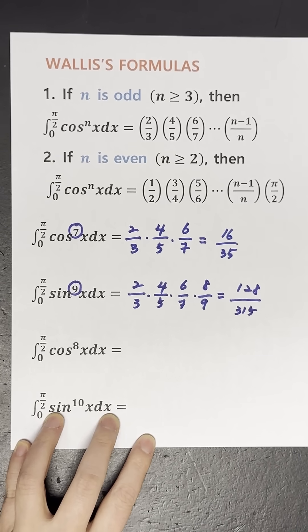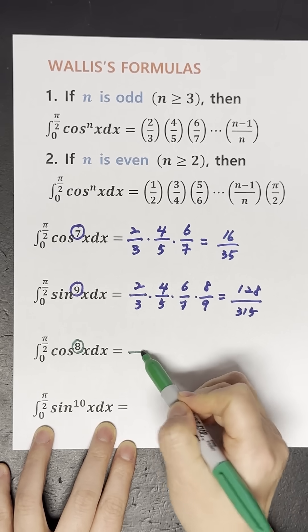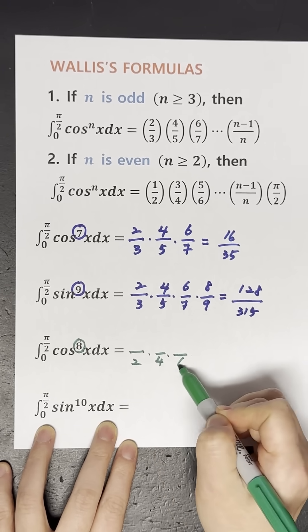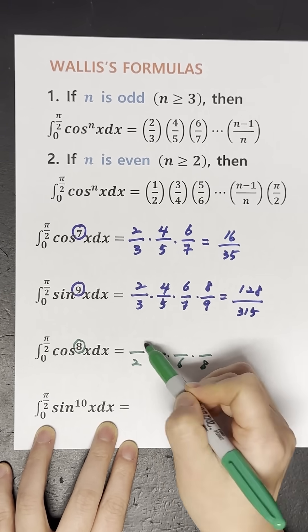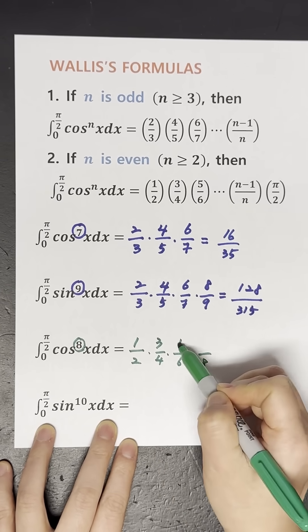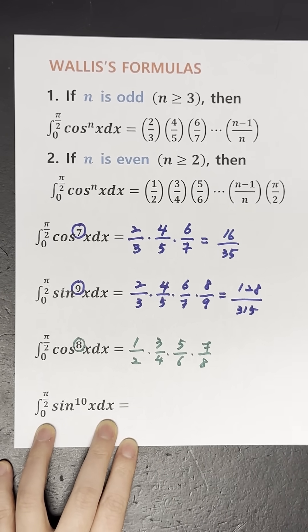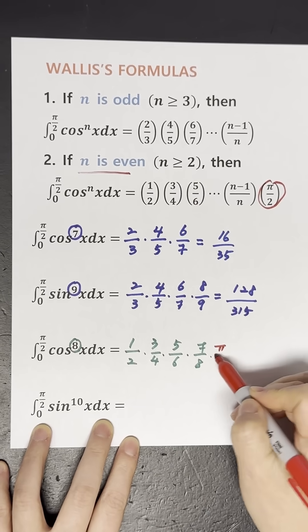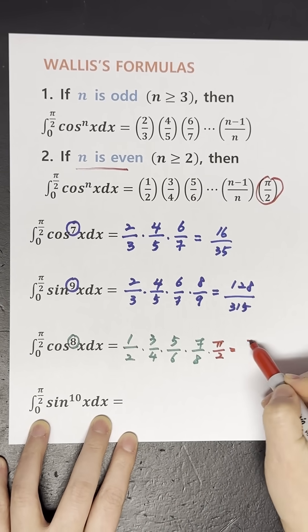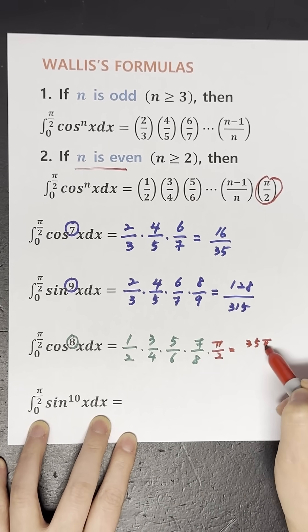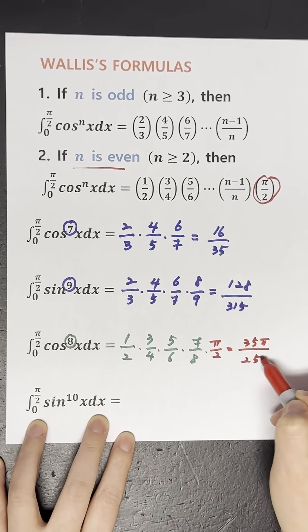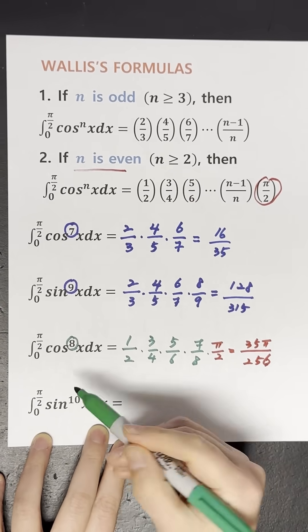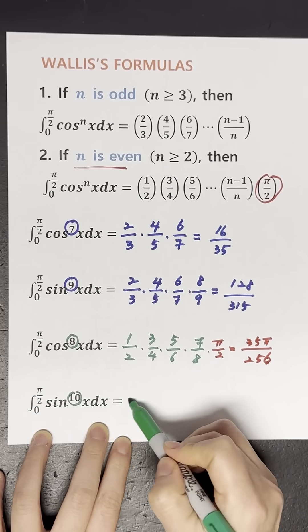And here, n is 8 — even. This time, we'll also multiply pi over 2 to get the answer. And again, n equals 10, even.